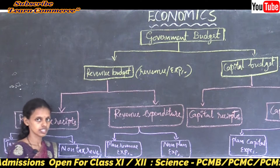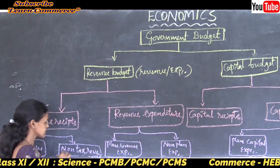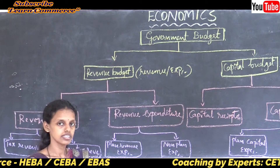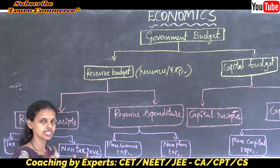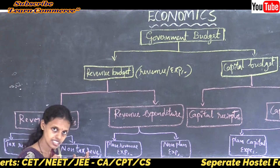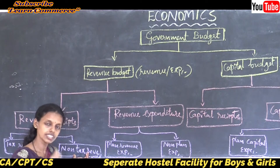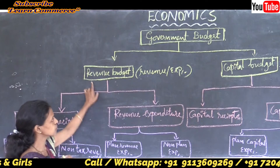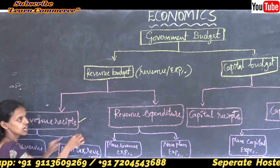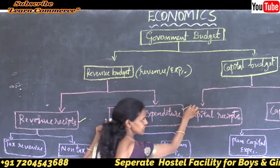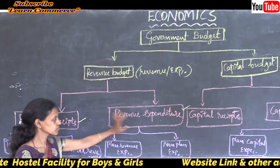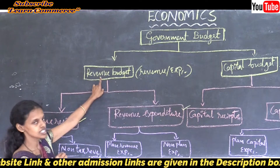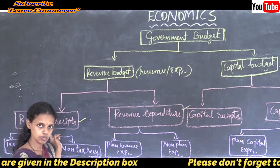There are two types in revenue receipts: one is tax revenue and the other is non-tax revenue. Tax revenue means you are directly paying tax and the government is receiving that revenue. Non-tax revenue means revenue which is not earned through tax — fees, penalties, grants, and other miscellaneous sources are included in non-tax revenue. The second component of revenue budget is revenue expenditure.